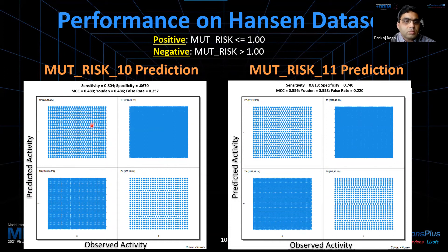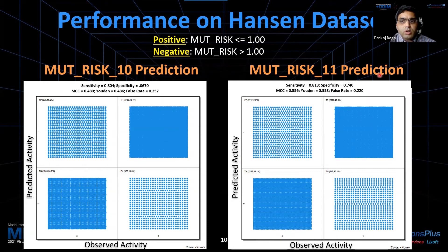The new updated MuteRisk gives us a 22% false positive rate, or 78% accuracy, with slightly better performance than the existing MuteRisk model.